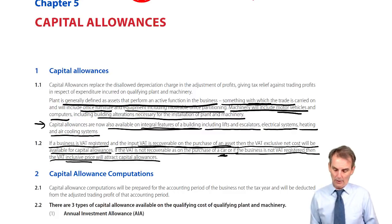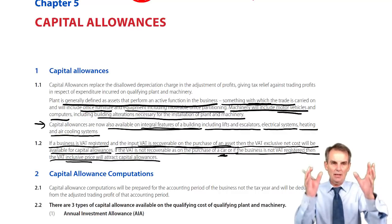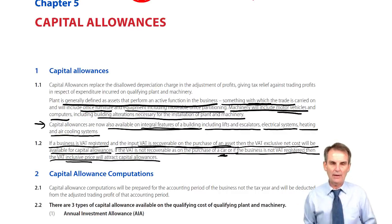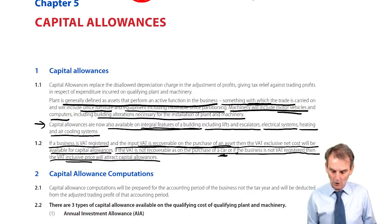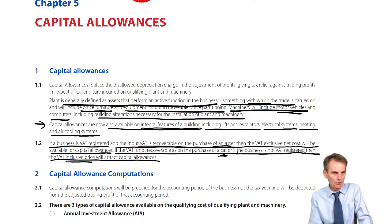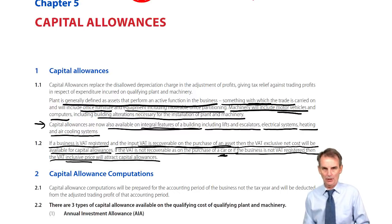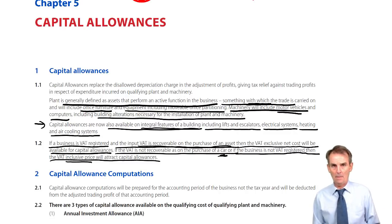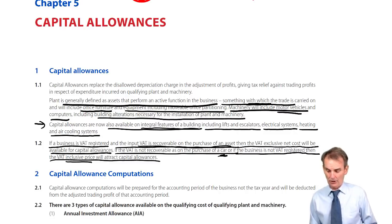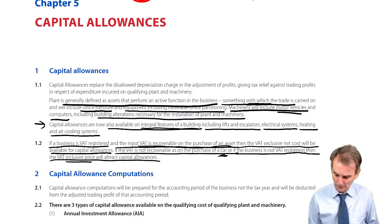More often than not, in most exam questions, they don't bring VAT into it and just say this is the cost of the asset, so you don't even have to consider VAT. However, in a VAT question you may have to deal with this issue. We must prepare a capital allowance computation for the same period as we did our adjusted profit — that's the accounting period of the business — and we'll then be able to deduct capital allowances from the adjusted trading profit.